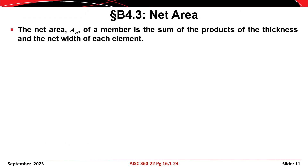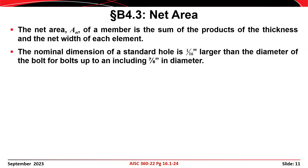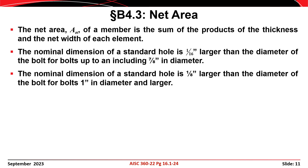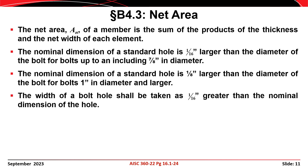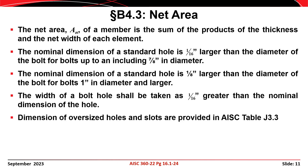The area of the net section is taken as the sum of the products of the net widths and the thicknesses of each element. Standard holes are fabricated 1/16 of an inch larger than the bolt diameter for bolts up to and including 7/8 inch, whereas standard holes are fabricated 1/8 of an inch larger for bolts 1 inch in diameter and larger. When calculating the net width, the width of a bolt hole is taken as 1/16 of an inch larger than the nominal dimension of the hole to account for possible damage during fabrication. Several types of holes are permitted, including standard holes, oversized holes, short slots, and long slots.